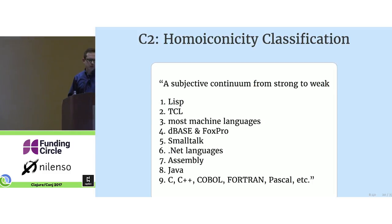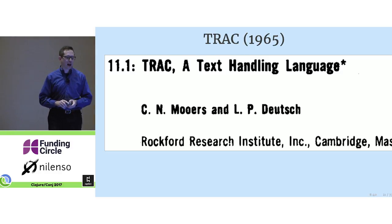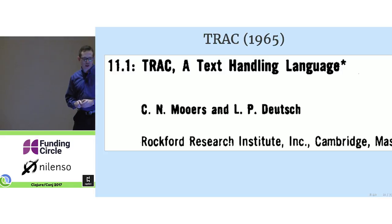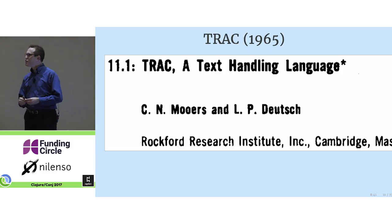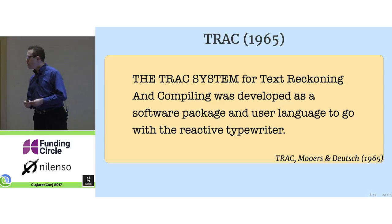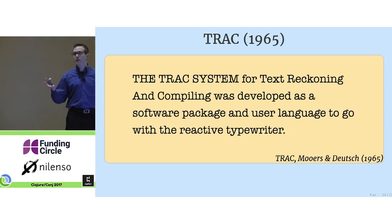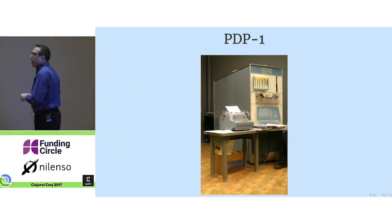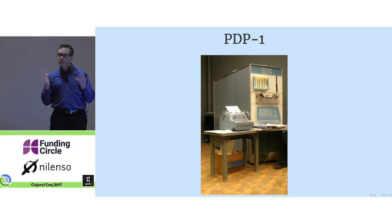One thing everyone does seem to agree on is the origin of the term: a paper from 1965 by Charles Moores and Peter Deutsch about a system they invented called TRAC. TRAC was designed to be what they called a reactive typewriter, or what we might now recognize as a text editor — still probably ten years before we had full-screen text editors like vi or Emacs. They were doing this on the PDP-1, which does not have a screen, so they were trying to build a programmable text editor on a machine without a screen.